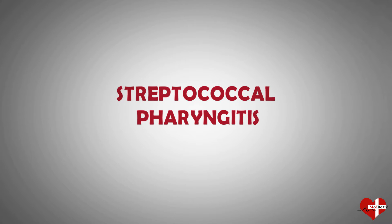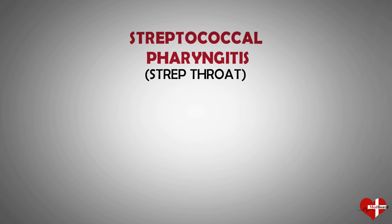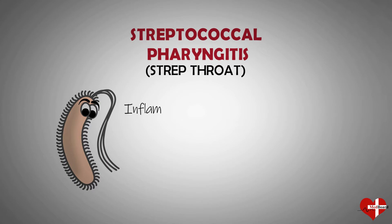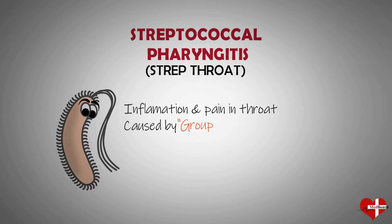Streptococcal pharyngitis, also known as strep throat, is a bacterial infection that causes inflammation and pain in the throat. This common condition is caused by group A streptococcus bacteria. Strep throat can affect children and adults of all ages.